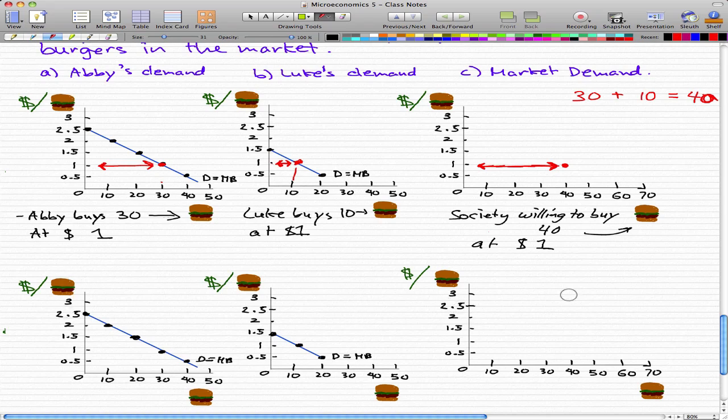So at $2.50, nobody is willing to buy any burgers. Abby will buy zero, and Luke will buy zero. At $2, Abby is willing to buy 10 burgers, and Luke is willing to buy zero. So that's 10 plus zero, that's just 10.